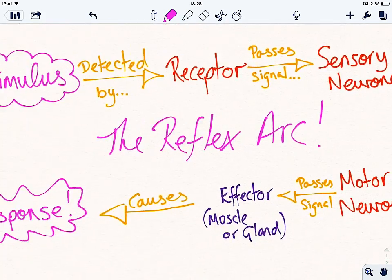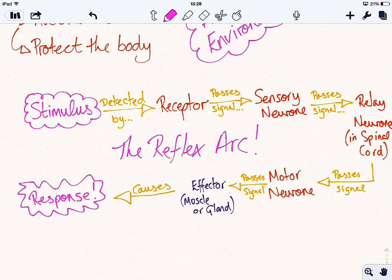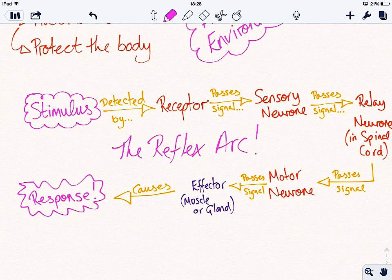Now it's really important, if you're answering an exam question on this, you must not use the word nerve. It must be either nerve cell or neuron, and you must talk in pairs. So you must say that the receptor passes the signal to the sensory neuron, it's usually worth a mark. The sensory neuron passes the signal to the relay neuron in the spinal cord, that's usually worth a mark. So talk about it in pairs all the time.